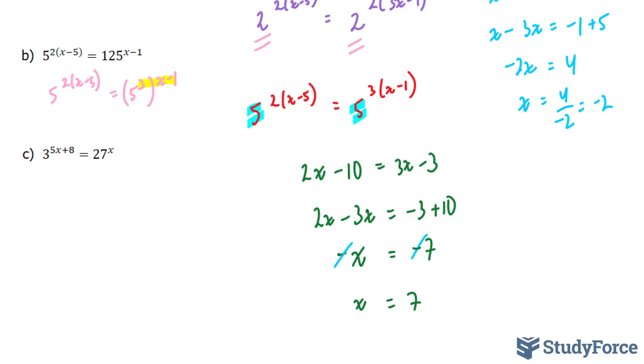Now finally, we're going to use the same technique for c. Notice that the base here is a 3 and the base here is a 27. We need to make 27 into the base 3. 3 to the power of 3 gives us 27. So we're left with 3 to the power of 5x plus 8 is equal to 3 to the power of 3, bracket x. These two combine to form 3x.